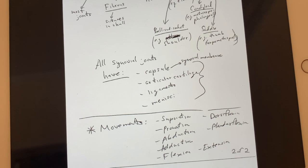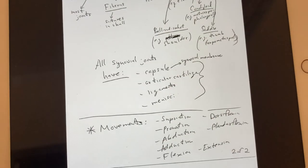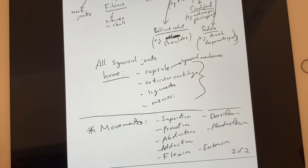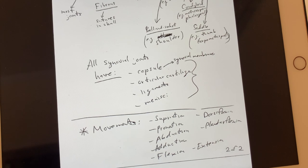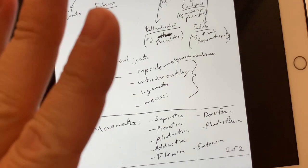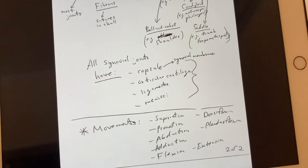Two other examples are supination and pronation. Supination means you're turning the palms of your hands to face up. Pronation is turning them the other way — facing down. This twisting motion is possible because we have two bones between the elbow and the wrist — the radius and ulna — giving us that flexibility. Dorsiflexion and plantar flexion are only with the foot. Plantar flexion is when you push your foot down. Dorsiflexion is when you raise your toes up toward the back of the leg.